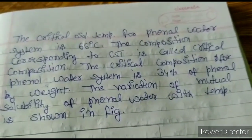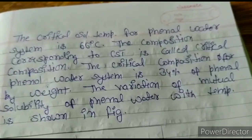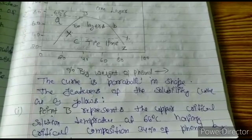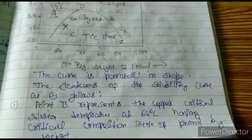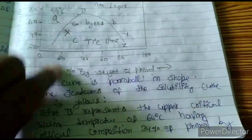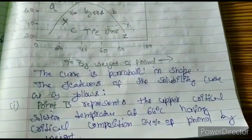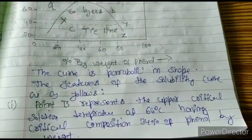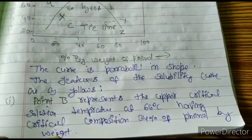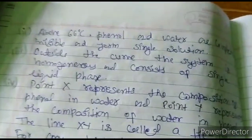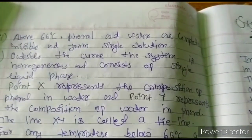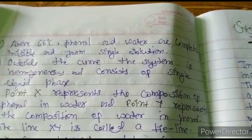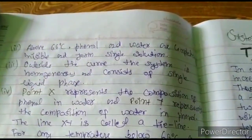The variation of mutual solubility of phenol and water with temperature is shown in the figure. The curve is parabolic in shape. Point B represents the upper critical solution temperature at 66 degrees Celsius, having the critical composition of 34 percent phenol by weight. Above 66 degrees Celsius, phenol and water are completely miscible and form a single solution. Outside the curve, the system is homogeneous and consists of a single liquid phase.